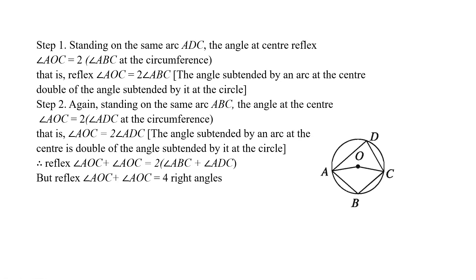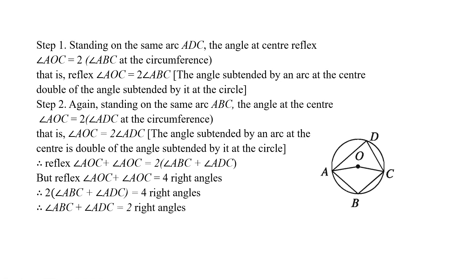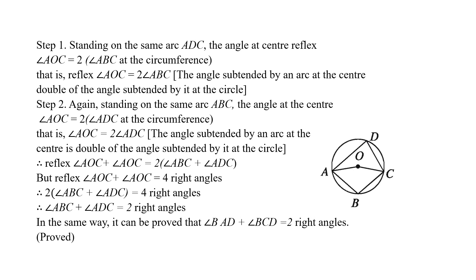But reflex angle AOC and angle AOC together equal four right angles. Therefore, two times angle ABC plus two times angle ADC equals four right angles. Therefore, angle ABC plus angle ADC equals two right angles. Similarly, it can be proved that angle BAD plus angle BCD equals two right angles.